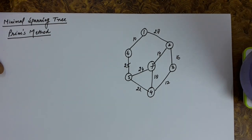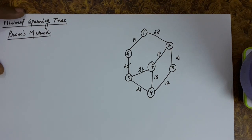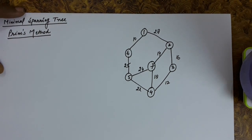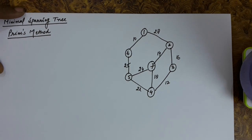In this lecture we will discuss the minimal spanning tree using Prim's method. We have already seen that the minimal spanning tree is a connected acyclic graph of the original graph with the sum of the cost of the edges being minimum. Prim's method suggests finding the edge sequence starting from the root vertex and connecting every other vertex such that there is no cycle and the sum of edge costs is minimum.